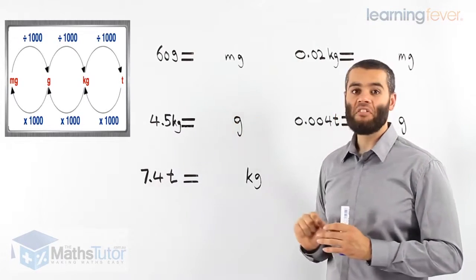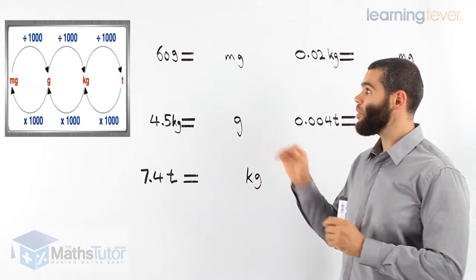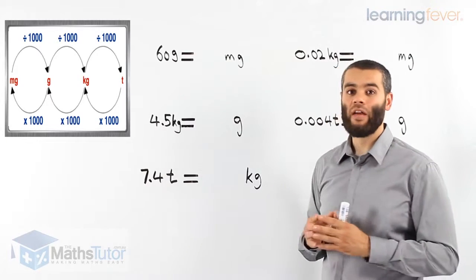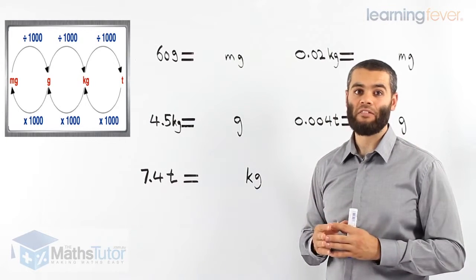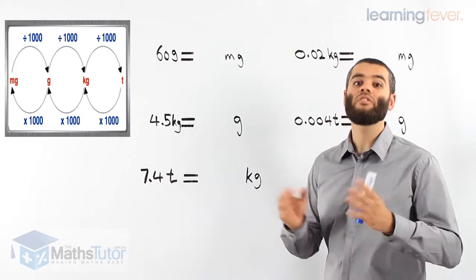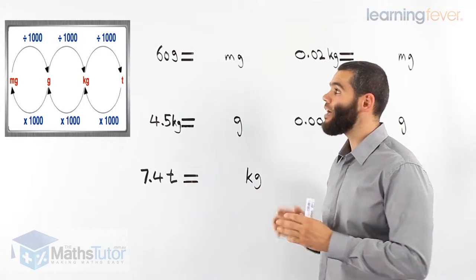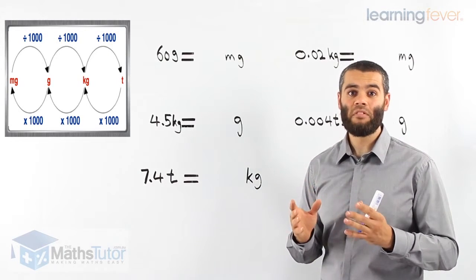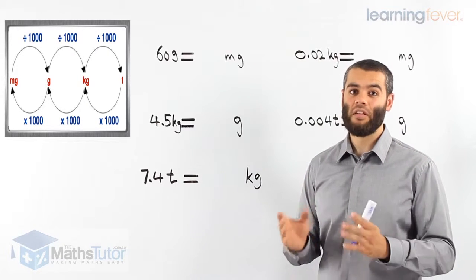We follow the process here and we'll get it all correctly straight away. The process says that if we want to go from milligrams to grams, we have to divide by a thousand. And if we want to go from grams to kilograms, we have to divide by a thousand. And to go from kilograms to tons, we have to divide by a thousand. Why a thousand? Because there are a thousand milligrams in a gram, a thousand grams in a kilogram, and a thousand kilograms in a ton.